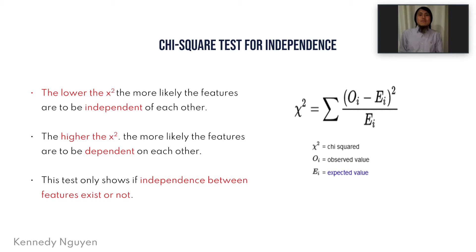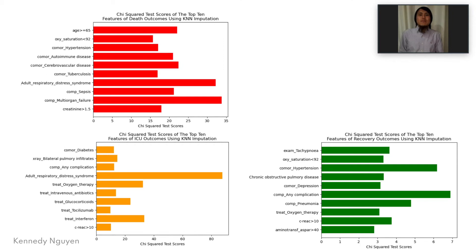The chi-square test we focused on is the test for independence. The hypothesis is that the closer the observed values are to the expected values, the more independent the features are of each other. In machine learning, the higher the chi-square values, the less independent the features are of each other. Keep in mind the test is used to test if relationships exist between features, not to find the relationships. We chose chi-square for feature selection because its results are more consistent compared to other methods such as recursive feature elimination. You can see graphs made in Python with matplotlib showing the features selected by the chi-square test for each outcome.